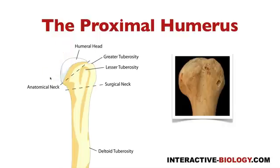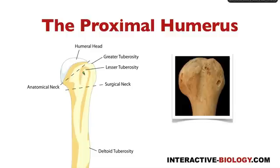Now for the structures of the humerus. The first one is the head of the humerus, right here. We also have two tuberosities — the greater and the lesser tubercles. The greater tubercle is bigger, and the lesser tubercle is smaller. In between those tubercles, we have a groove called the intertubercular groove, also called the bicipital groove.